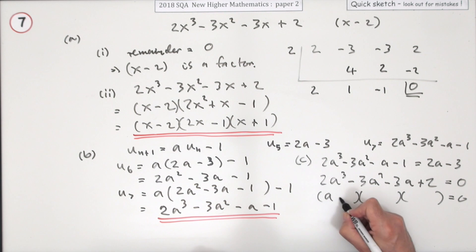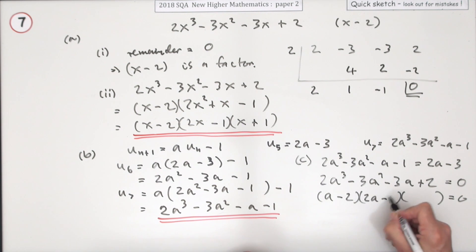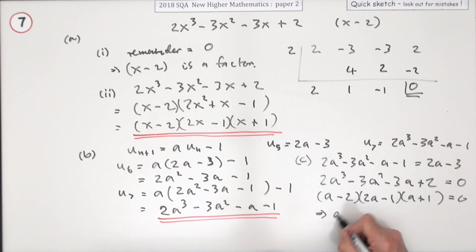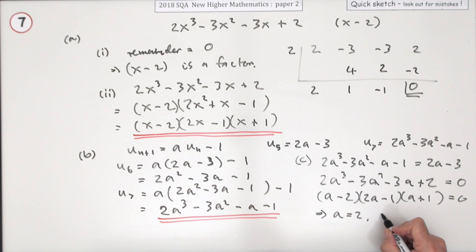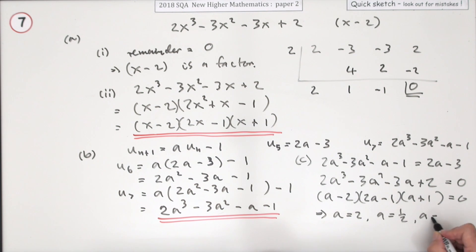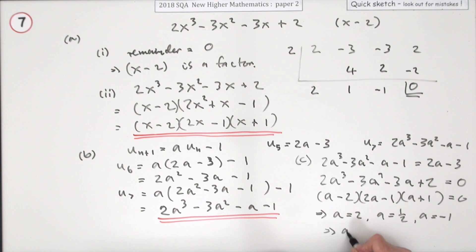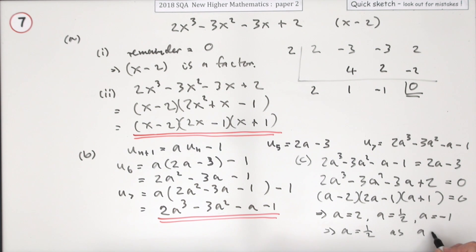It's the same factorisation but with a's: a minus 2, times 2a minus 1, times a plus 1. Which gives the answers a equals 2, a equals a half, or a equals negative 1. Now, if a limit exists, it has to be a proper fraction — so a equals 2 and a equals negative 1 are out. That means a equals a half, since the absolute value of a must be less than 1.